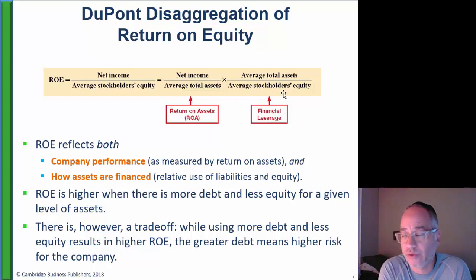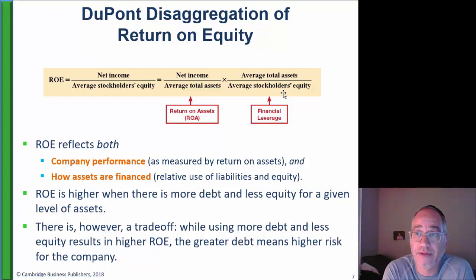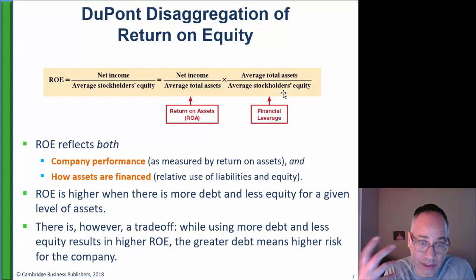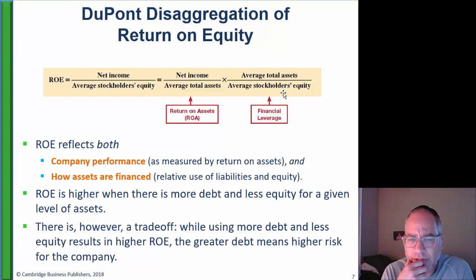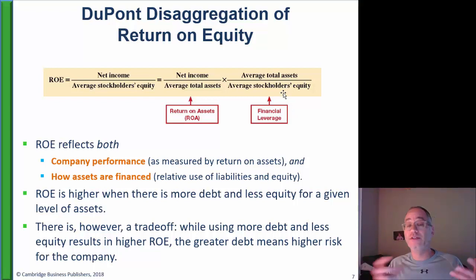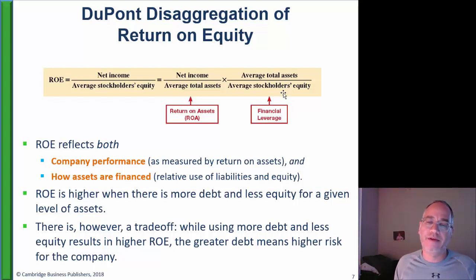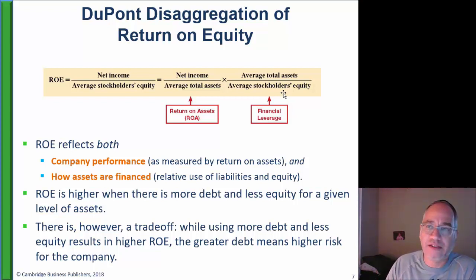Debt is a two-edged sword. If a company is profitable, a good amount of debt is going to make it more profitable. On the other hand, if the company is not profitable, debt is going to push it in the other direction and increase losses. Return on equity is higher where there's more debt and less equity, but if you're losing money, you'll lose even more with debt. Therefore, debt increases risk, and we want to know how much of the return on equity comes from company performance versus risk.